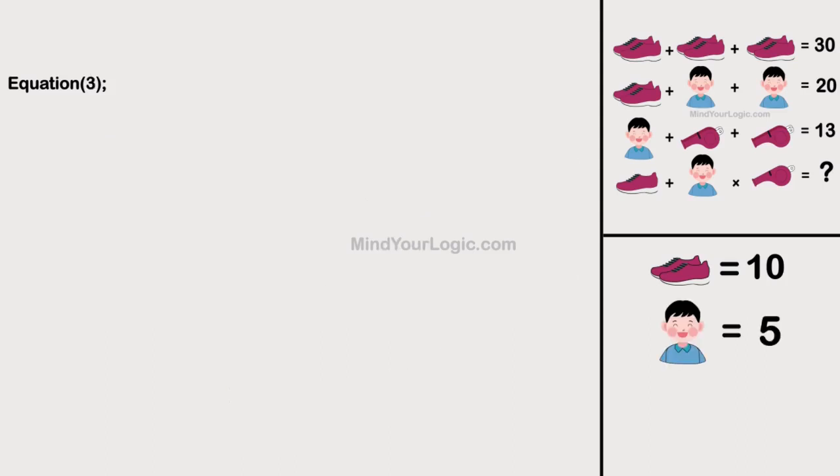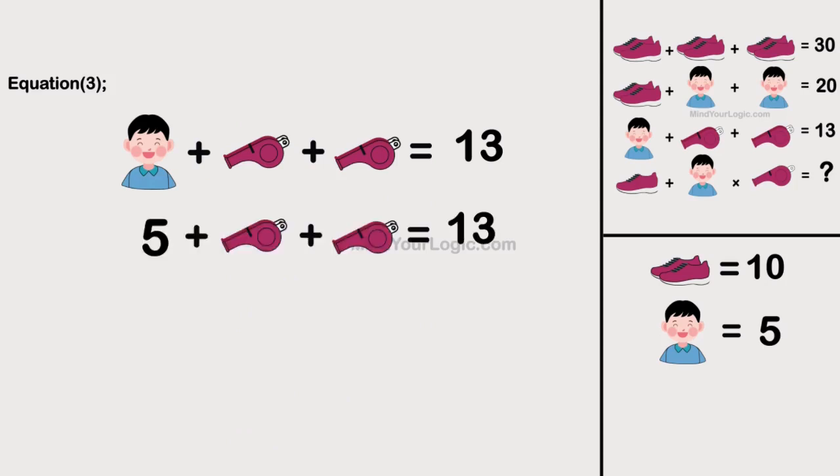Moving to equation 3. Boy plus two whistles plus two whistles equals 13. Substitute the value of boy in equation 3. On simplifying, we get the value of whistle as 2.